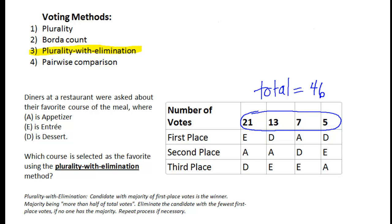There's a total of 46 votes for this election of appetizers, entrees, and desserts. The 21 plus 13 plus 7 plus 5 gives us a grand total of 46 votes. Now the majority means slightly more than half. The majority is more than half. That's the key. So in this particular case, half of 46 is 23, but we're not looking for half of the votes. We're looking for more than half.